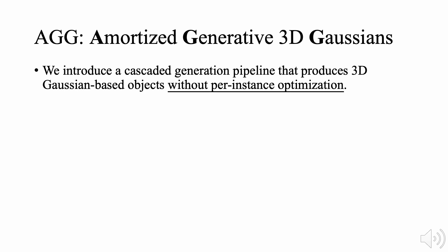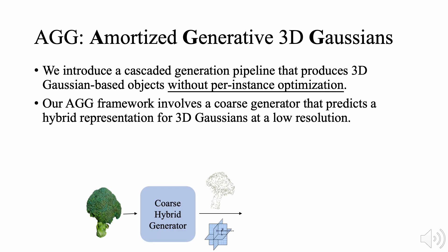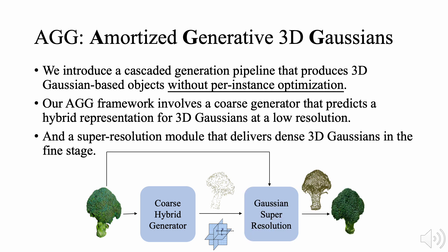We introduce a cascaded generation pipeline that produces 3D Gaussian-based objects without per-instance optimization. Our AGG framework involves a coarse generator that predicts a hybrid representation for 3D Gaussians at a low resolution, and a super-resolution module that delivers dense 3D Gaussians in the fine stage.